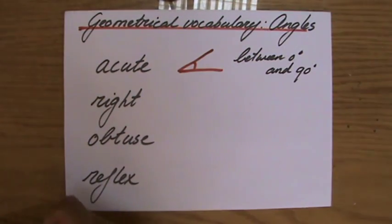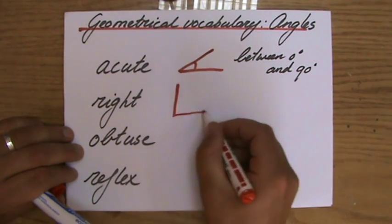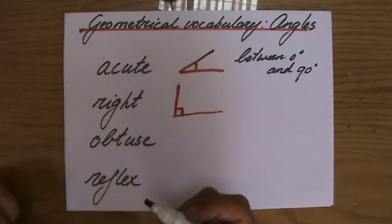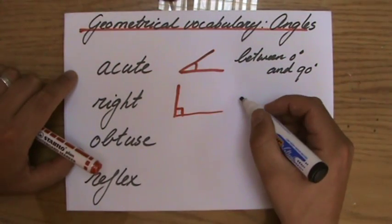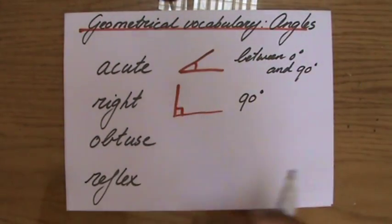Then a right angle, also called a perpendicular angle. We have this sign, the little square, which indicates an angle of exactly 90 degrees. So acute angle between zero and 90, right angle exactly 90 degrees.